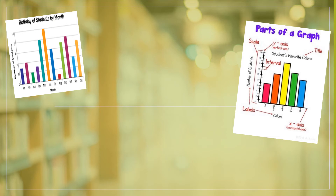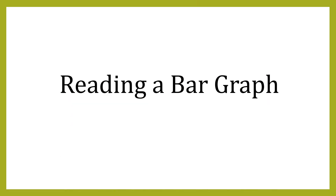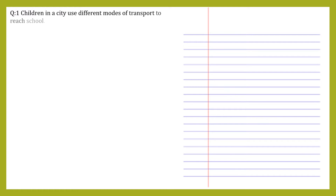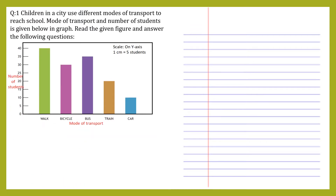Good morning students. Let's continue with chapter number six, bar graph module three. In this module we are going to cover extra questions on reading a bar graph. Question number one: children in a city use different modes of transport to reach school. Mode of transport and number of students is given in the graph. Read the given bar graph and answer the following questions.